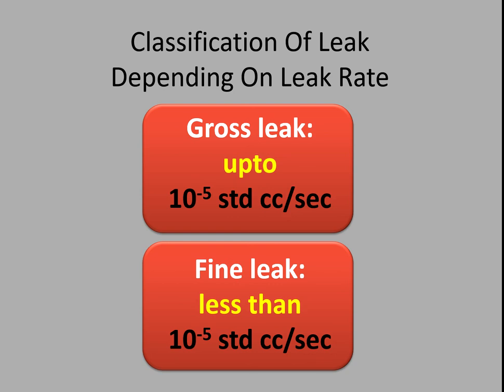On the basis of leak rate, leak is classified into two categories: gross leak and fine leak. Up to 10 raised to the power minus five standard cubic centimeter per second is classified as gross leak, and less than 10 raised to the power minus five standard cubic centimeter per second is classified as fine leak.